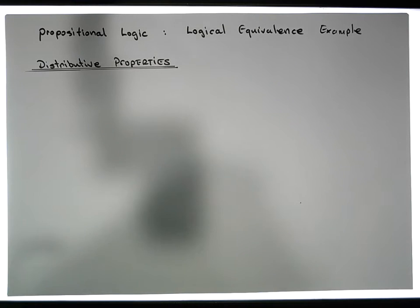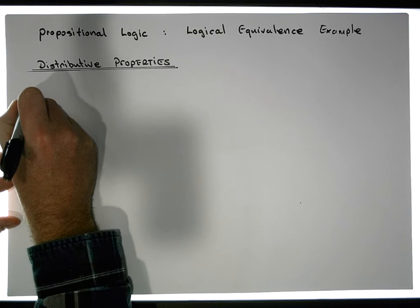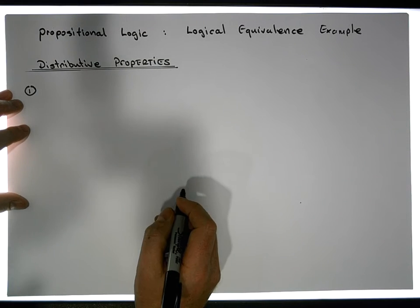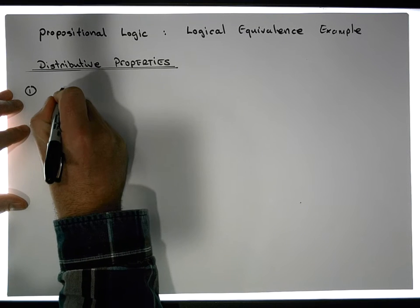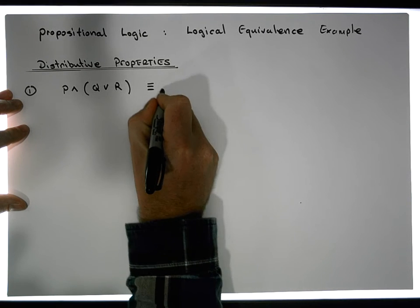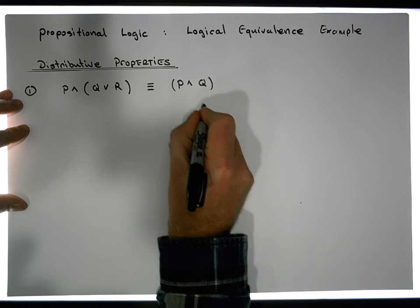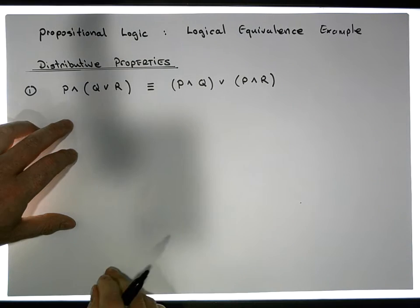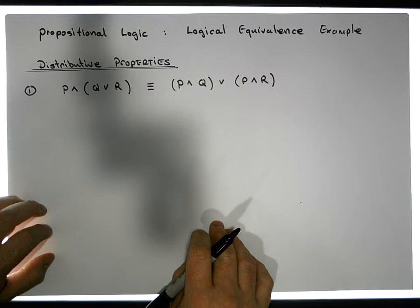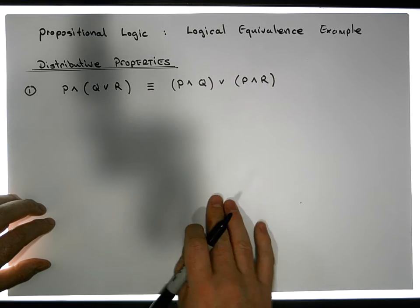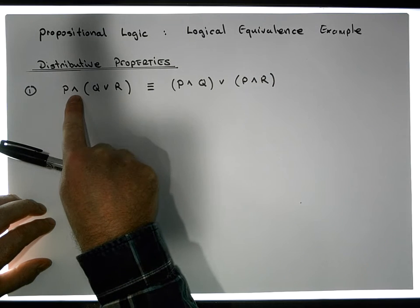We're going to look at the distributive properties and showing their equivalence using two proofs through truth tables. The first thing I'd like to show is that given three propositions P, Q, and R, P AND (Q OR R) is equivalent to (P AND Q) OR (P AND R). This is known as the distributive law — it's like multiplying out the brackets, similar to what we do in normal algebra but using the connectives AND and OR.